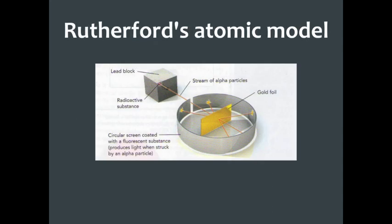Next we have Rutherford's atomic model. Rutherford took a radioactive substance that was emitting alpha particles — very tiny, positively charged particles — and those particles were aimed at a gold foil, a very thin leaf of gold. As he was sending those alpha particles at the foil, he observed that some of them would reflect back onto a screen around it, some would go straight through, and some would go through but be deflected — going a little bit sideways. So there were really three types of observations that he made.